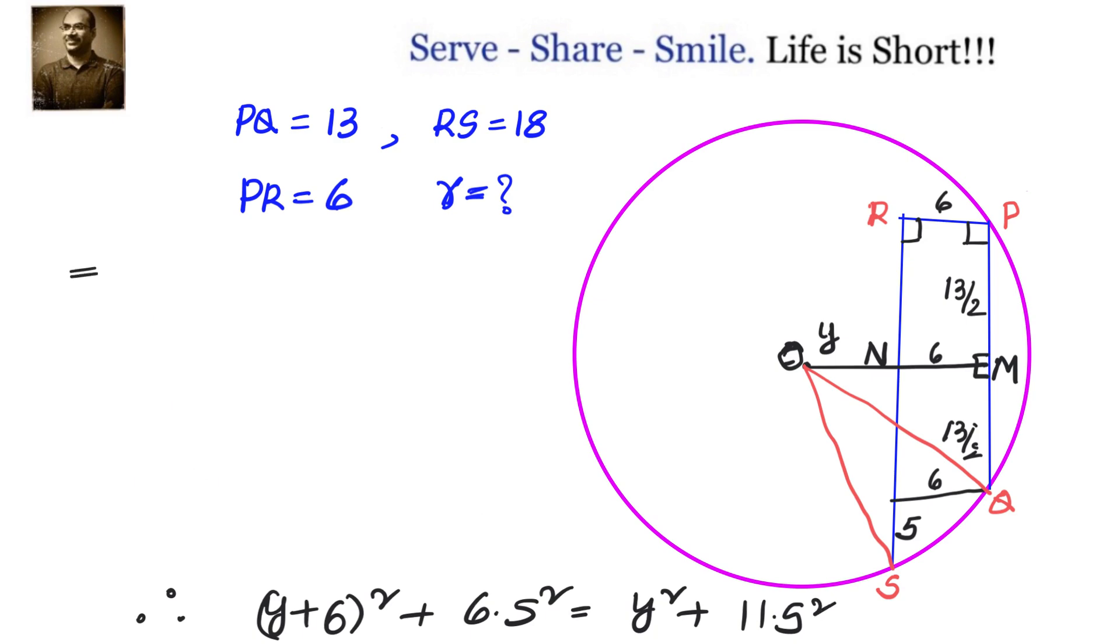Now let us expand them. We have Y² + 12Y + 36 + 42.25, that is 6.5 whole square, which equals Y² + 11.5².